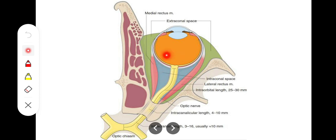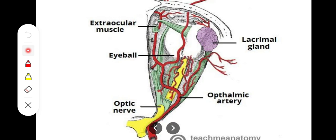Regarding relations of the optic nerve within the orbit: it is surrounded by the four recti muscles at the apex of the orbit. The central artery of the retina pierces the nerve from the medial side about 1.2 cm behind the eyeball, along with the central vein of the retina, entering at the optic disc. Additionally, the ophthalmic artery and nasal ciliary nerve cross over it from lateral to medial.